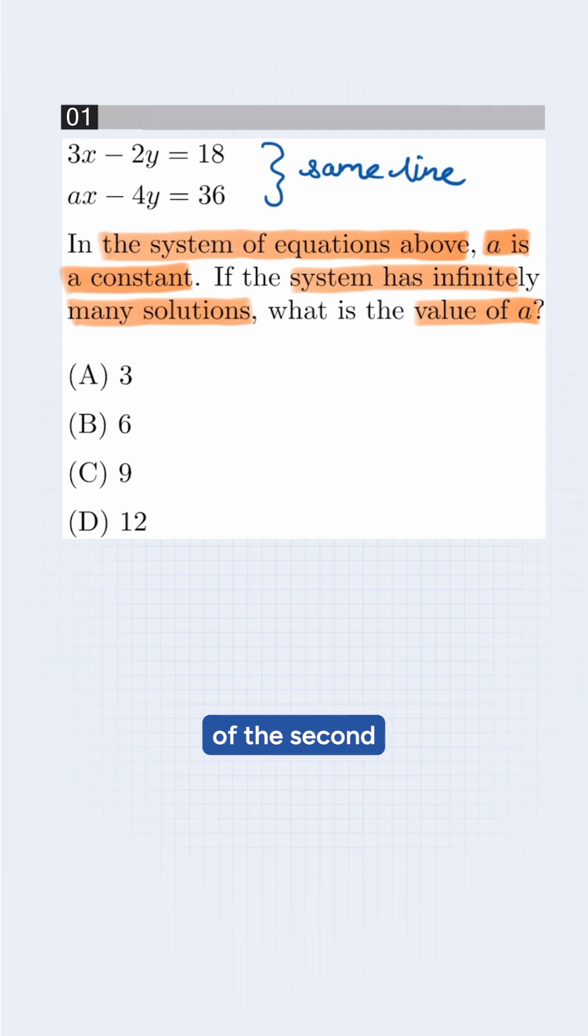Notice that the right side of the second equation is 36, which is double the right side of the first equation, which is 18. This suggests we should multiply the first equation by 2.